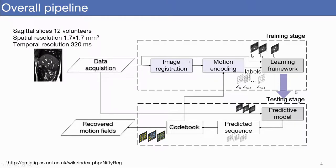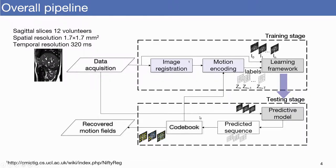Once the model is trained, we can predict future encoded motion maps. And using the codebook, those motion maps can be converted back into displacement fields.